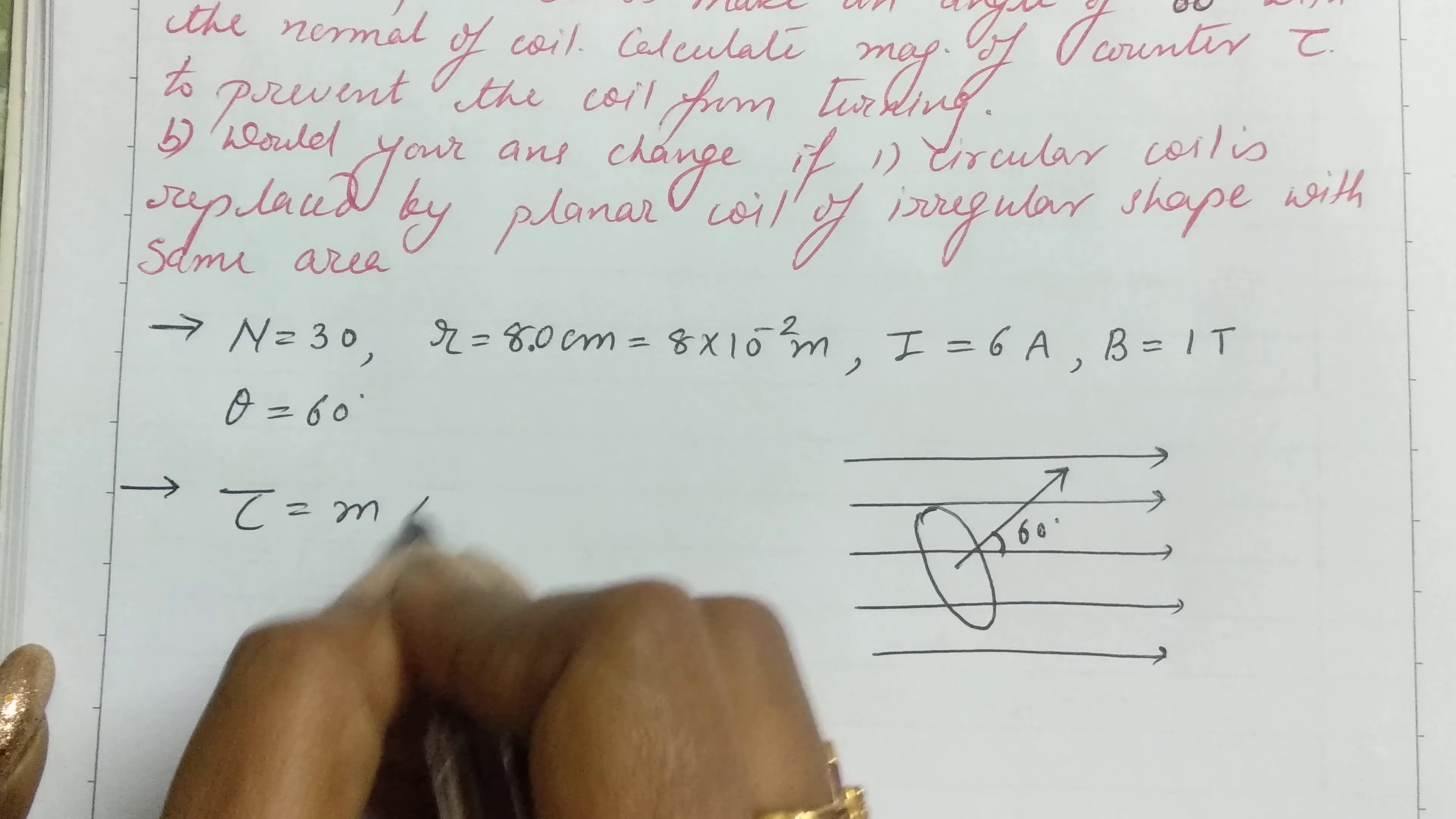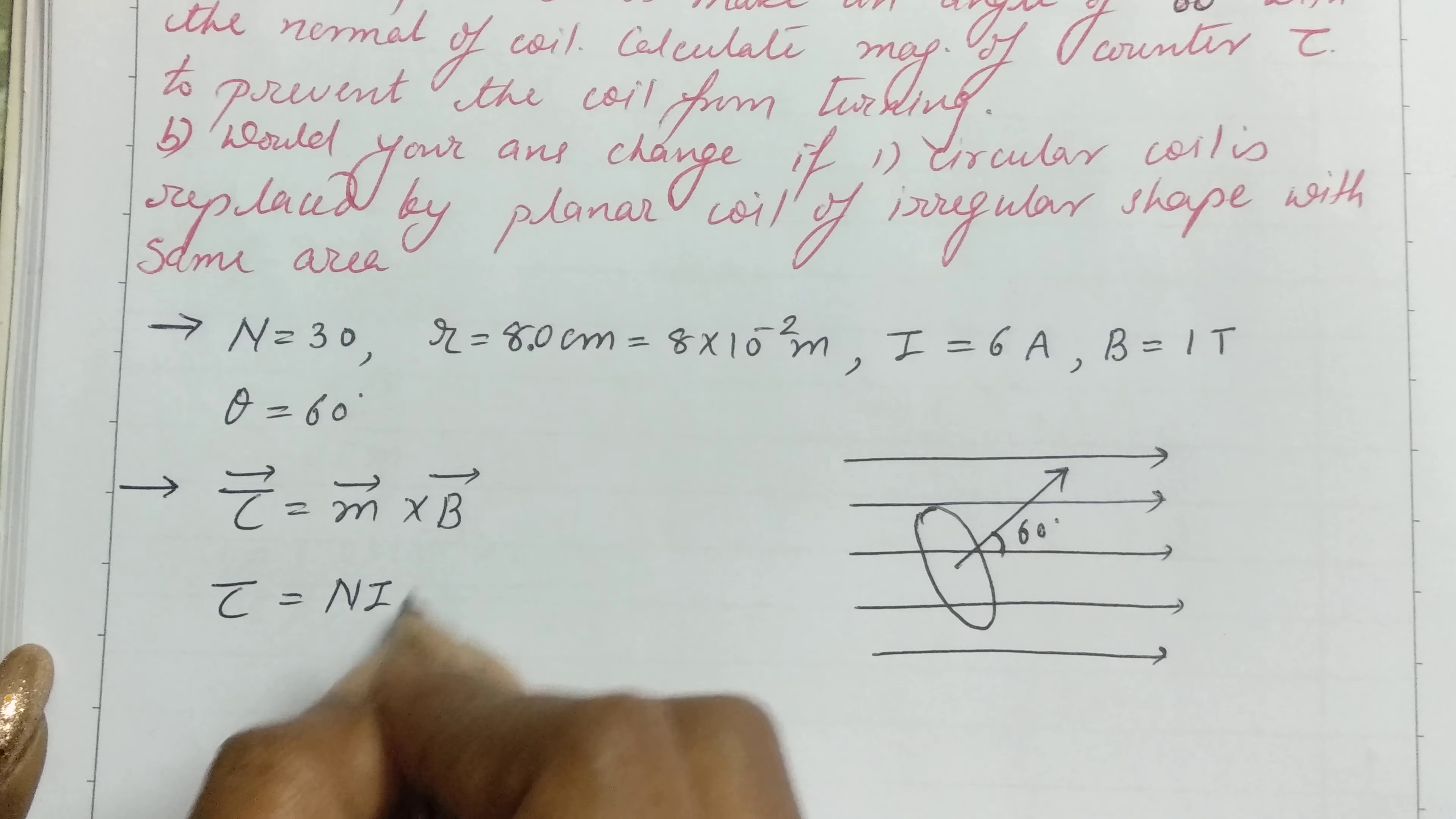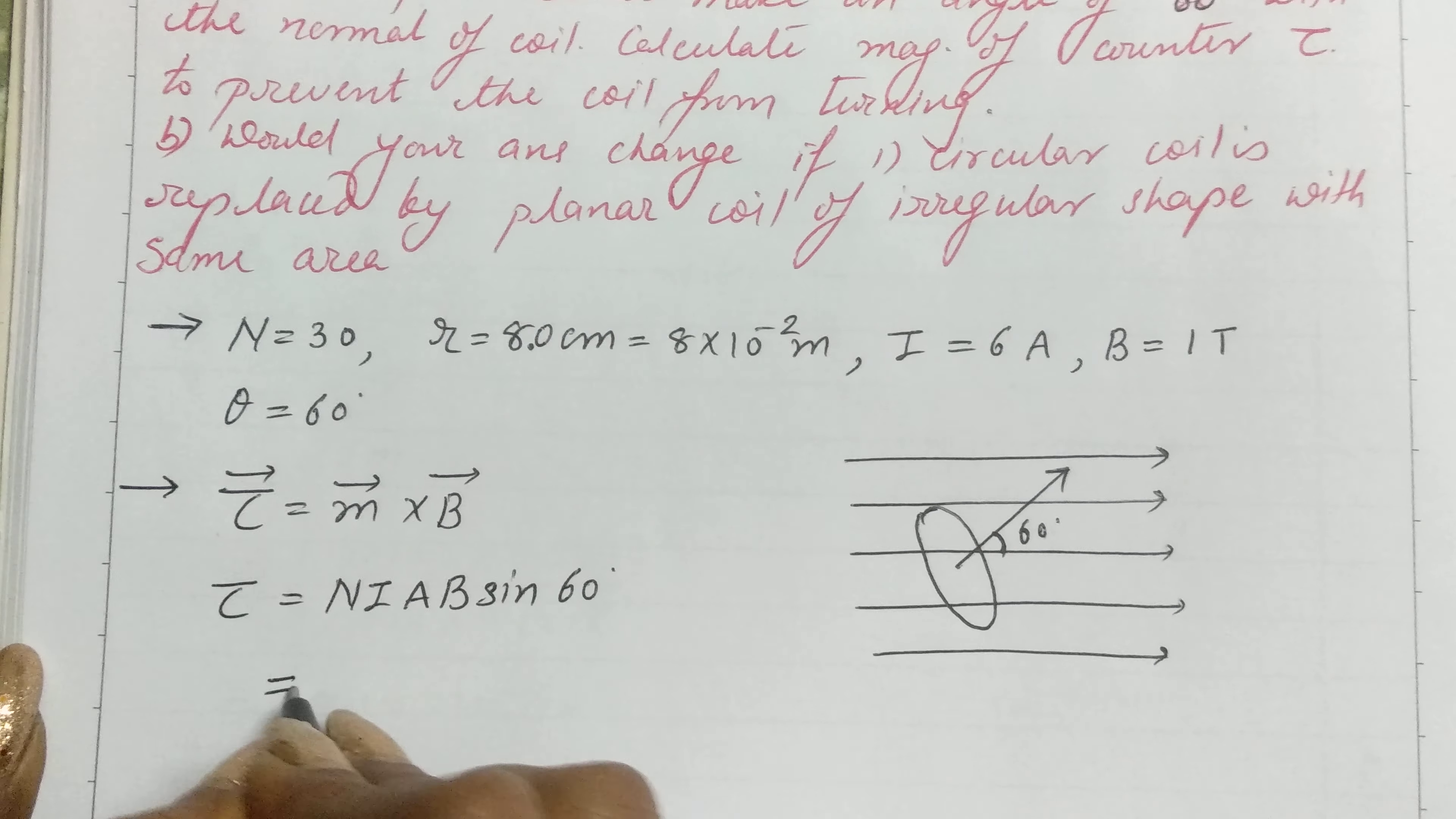τ = m × B, where m is the magnetic moment. In scalar form, this gives us τ = NIABsin(θ). The value of θ is 60 degrees, so we substitute sin(60°) and all the other values.